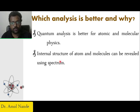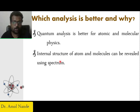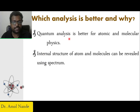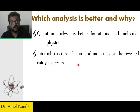Those are very tiny particles. The atom is tiny itself, the electron is tinier, and the nucleus is even smaller than the atom. All these small things can be explained only using quantum analysis. Spectral distribution and tiny things cannot be explained using classical mechanics. So for studying atomic and molecular physics, quantum mechanics is better.